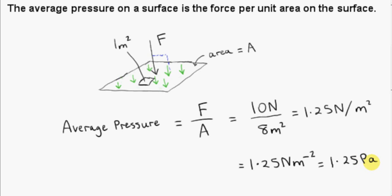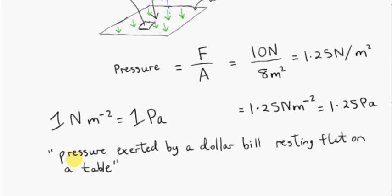We write Pa for pascal — that's the unit of pressure. So one newton per square meter is one pascal. According to Wikipedia, one pascal is the pressure exerted by a dollar bill resting flat on a table. One pascal is a very small pressure. It's so small, in fact, that when we measure pressure we usually work in kilopascals. So one kilopascal is a thousand pascals.